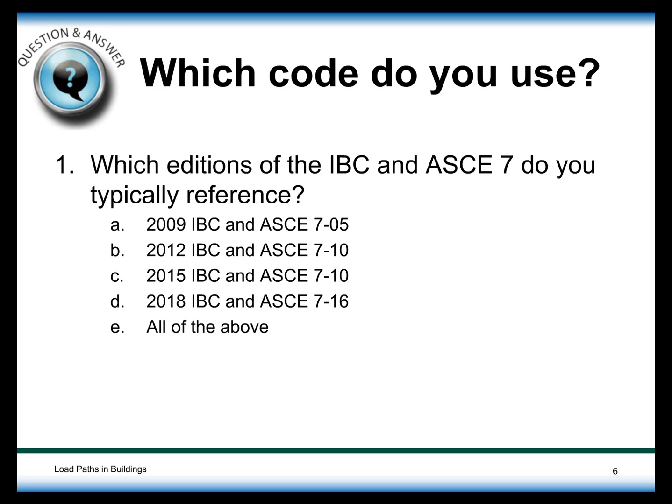The first question of the day: which code do you use? Type A, B, C, D, or E into your chat box. The question is which edition of the IBC and ASCE 7 you typically reference. A is 2009 IBC and ASCE 7-05; B is 2012 IBC and ASCE 7-10; C is 2015 IBC and ASCE 7-10; D is 2018 IBC and ASCE 7-16; or E is all of the above as needed.